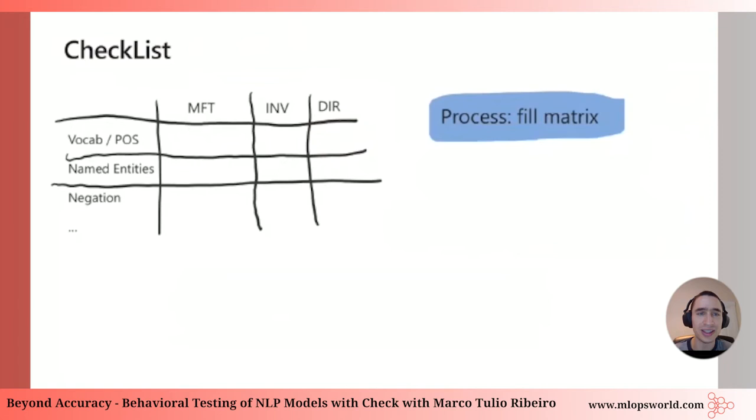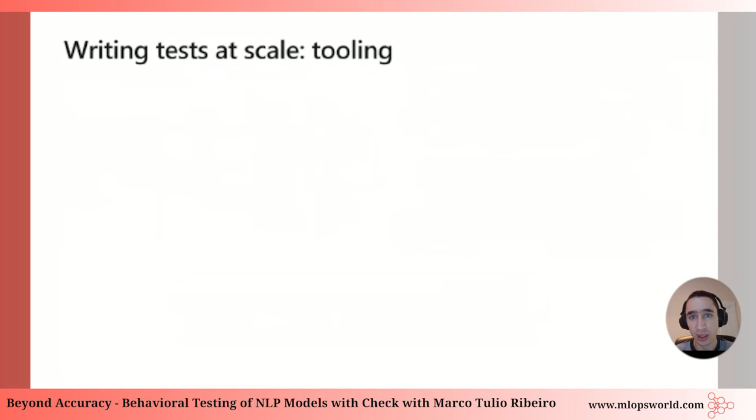CheckList is both a process and a tool — it basically involves filling this matrix. The matrix tells you what to test and how to test, and then you write tests for every cell and test your model with them.